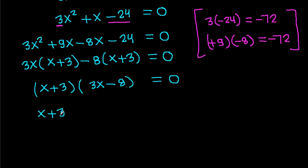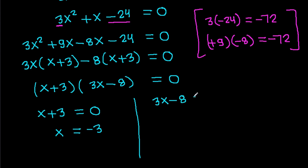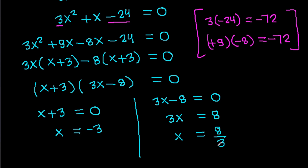Either (x plus 3) equals 0, which means x equals minus 3. Or (3x minus 8) equals 0, so 3x equals 8 and x equals 8 by 3.